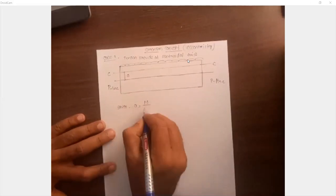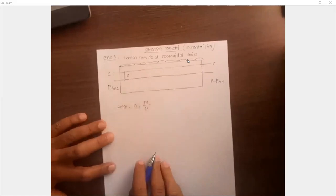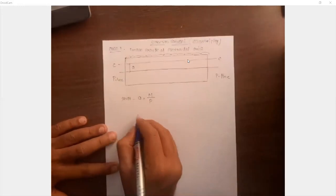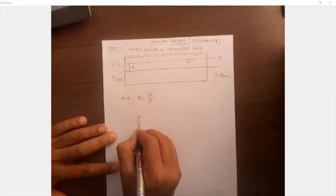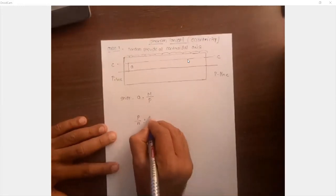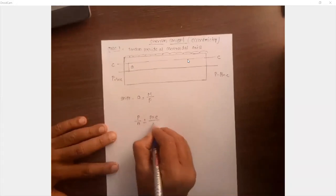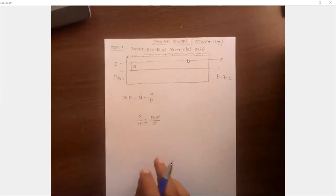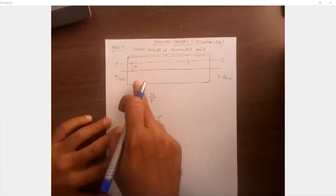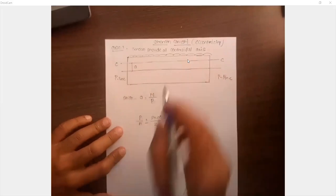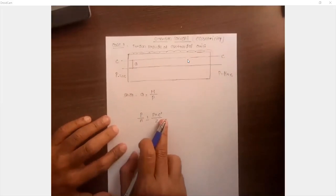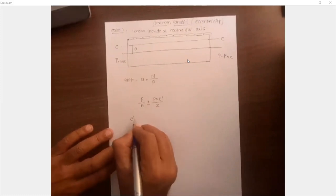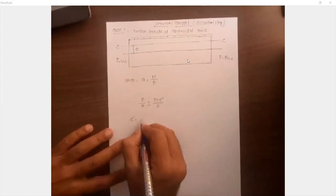How we are going to get the value of 'a'? The value of 'a' we are going to get as M divided by P — moment and force. And when we are going to calculate the stresses, we are going to use the formula plus or minus P into e-dash divided by Z. If they provide the eccentricity of the tendon, we have to use this e-dash. Now, what is e-dash? E-dash is the eccentricity of the C-line.